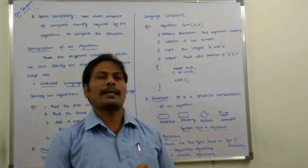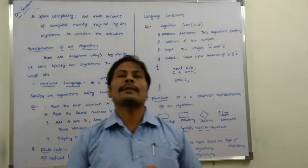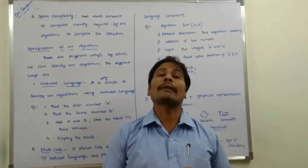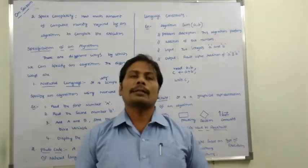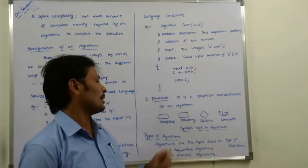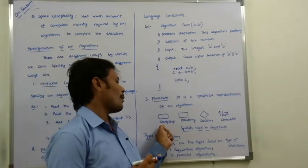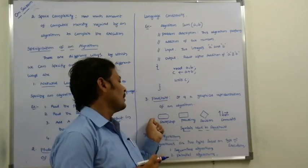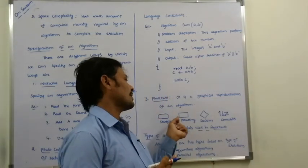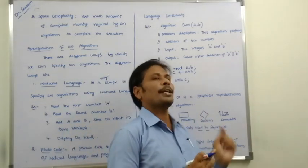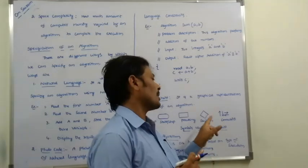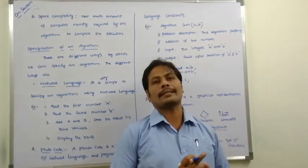The third algorithm specification is flowchart. A flowchart is a graphical representation of an algorithm — the algorithm is represented using graphical symbols. The symbols used in a flowchart are: bubble shape for start or stop; rectangular box for processing (execution of statements); rhombus (diamond) shape for the decision box — either yes/no or true/false; and connector or direction symbols to connect the elements.